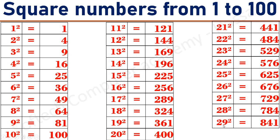28 square equals 784. 29 square equals 841. 30 square equals 900.